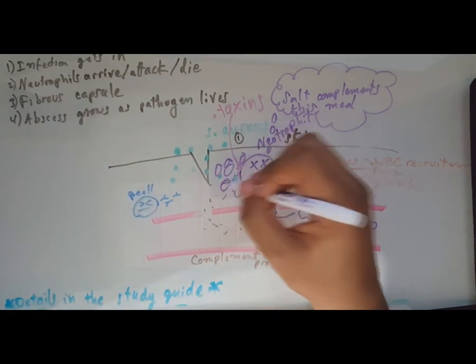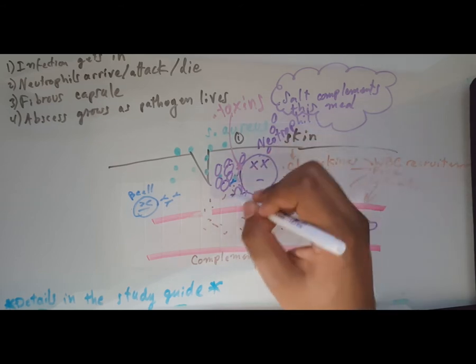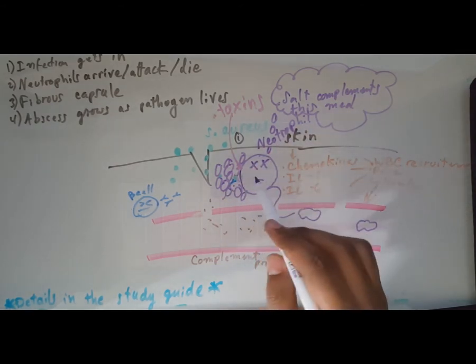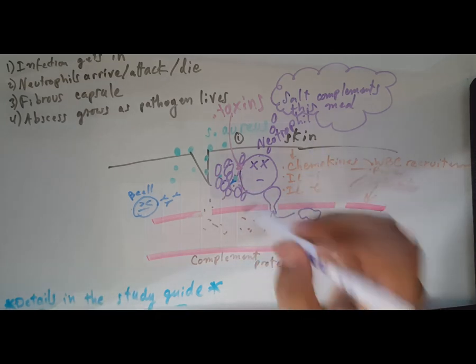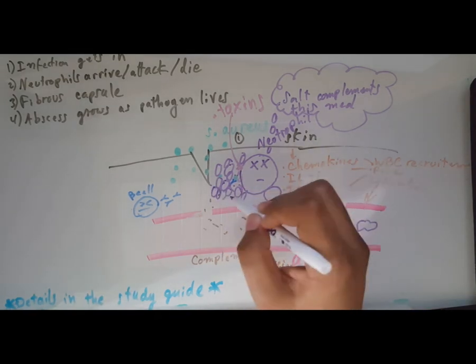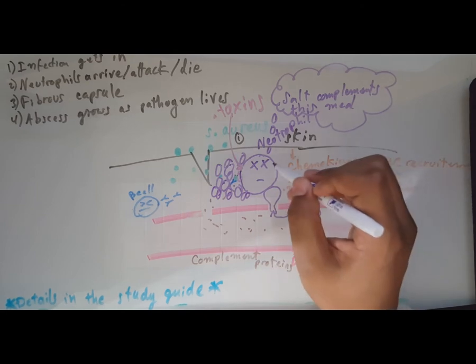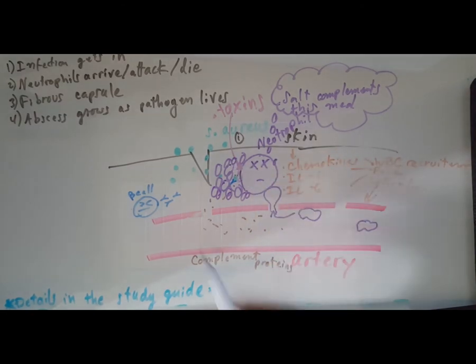Over time we're gonna get more and more neutrophils that come to the area and try to attack, but they're just gonna die because staph aureus is spitting out all this toxin. Some of them do eat the staph aureus but they still die. That's step two complete.